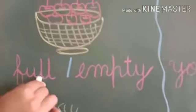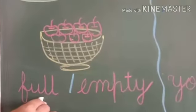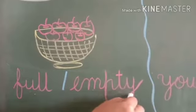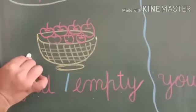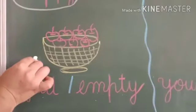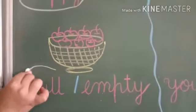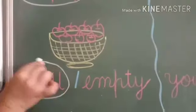F-U-L-L, full, full means bara hua. And E-M-P-T-Y, empty, empty means khali. Look at the picture. Basket khali hai ya bari hui hai? Bari hui hai. So circle on F-U-L-L, full.